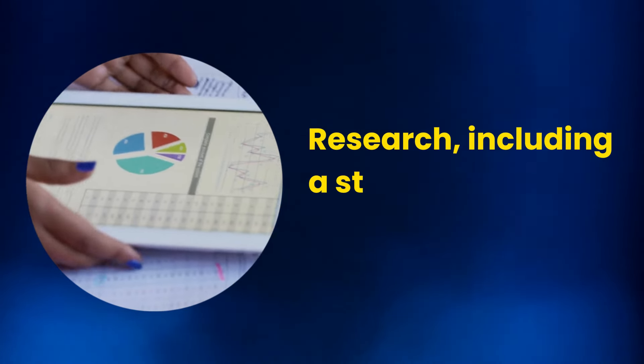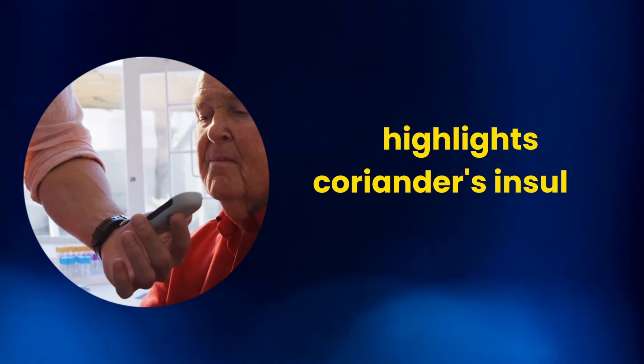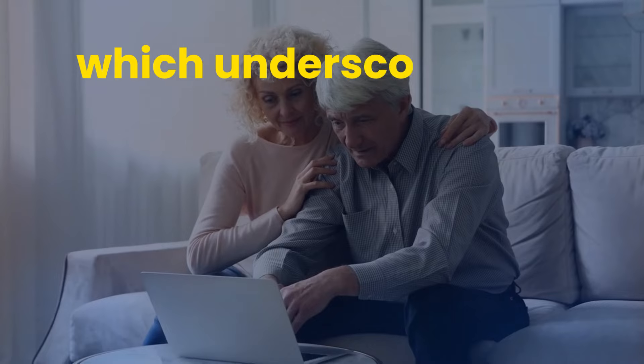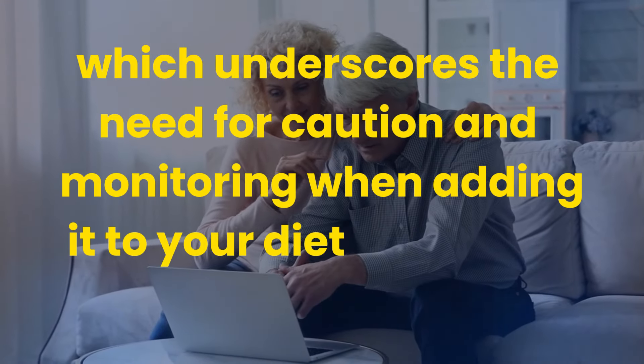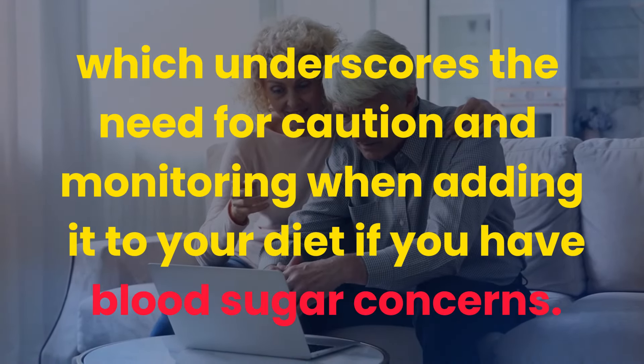Research, including a study published in the journal Food Chemistry, highlights coriander's insulin-like activity, which underscores the need for caution and monitoring when adding it to your diet if you have blood sugar concerns.